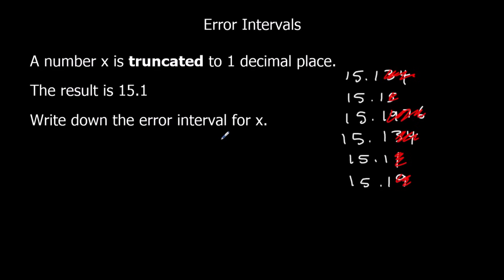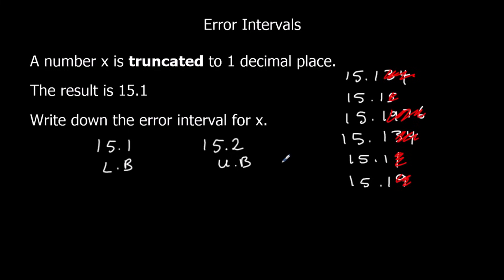So to write down the error interval, we have 15.1, and we write down the number that comes next — what comes after 15.1? That's 15.2. So 15.1 is our lower bound and 15.2 is our upper bound. We do the inequality notation the same way: x can equal the lower bound 15.1, but it can't equal the upper bound because 15.2 truncates to 15.2. Anything all the way up to 15.2 — so 15.1999 truncates to 15.1 — but not 15.2 itself.